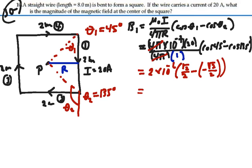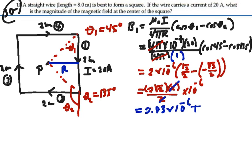So this is going to be 2 times the square root of 2 over 2 times 10 to minus 6. The 2's cancel out and 2 times the square root of 2 is 2.83.